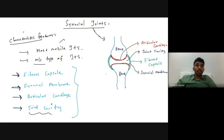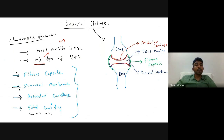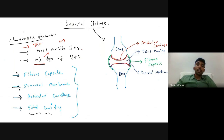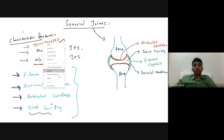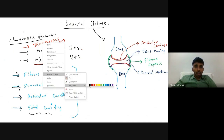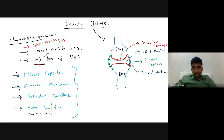Synovial joints are the most mobile and most common type of joints. They are also known as diarthroses.